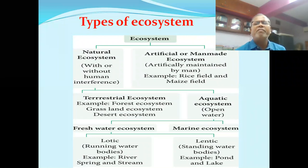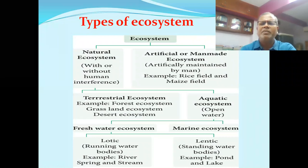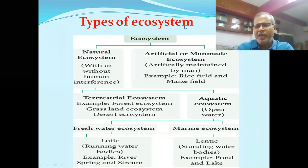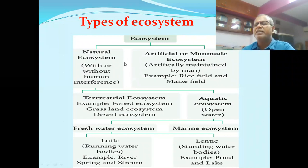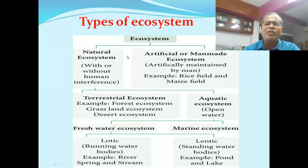Today I want to give a brief idea regarding types of ecosystem. Ecosystem is a structural and functional unit of ecology. Two types of ecosystem are reported on Earth, namely natural ecosystem and artificial or man-made ecosystem.